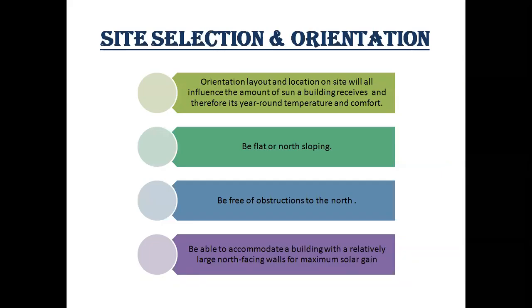For site selection and orientation, the orientation, layout, and location on site all influence the amount of sun a building receives and therefore its year-round temperature and comfort. The site should be flat or not steeply sloping, free of obstructions to the north, and able to accommodate a building with a relatively large north-facing wall for maximum solar gain.